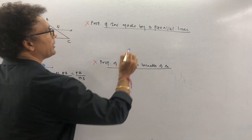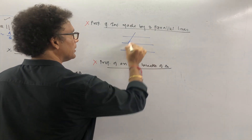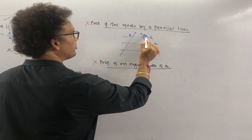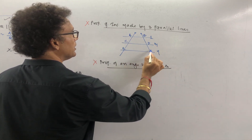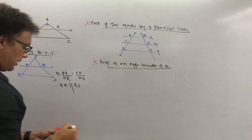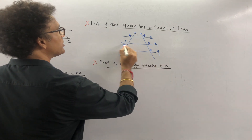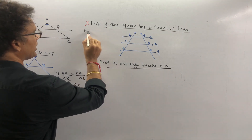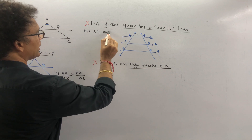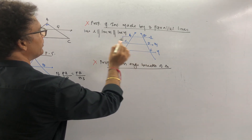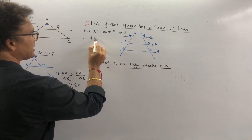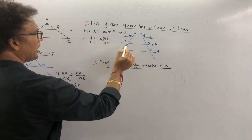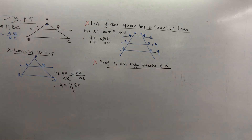Now the property of intercept made by three parallel lines. This is your line l, this is your line m, and they are parallel. Points are A, B, C, D, E, F. If all three lines are parallel and you have a transversal, the property is: if line l is parallel to line m is parallel to line n, therefore AC upon CE is equal to BD upon DF.